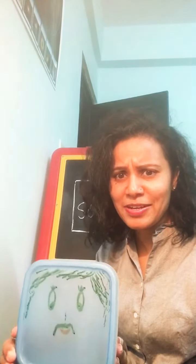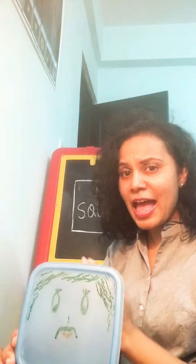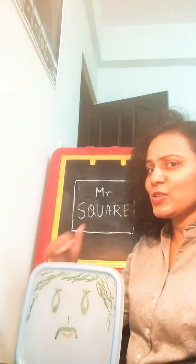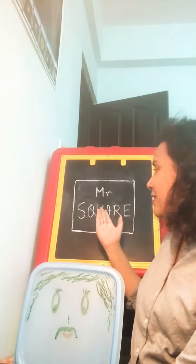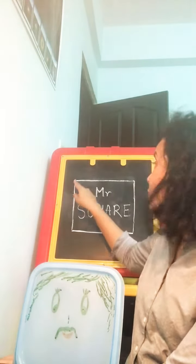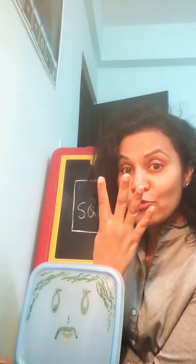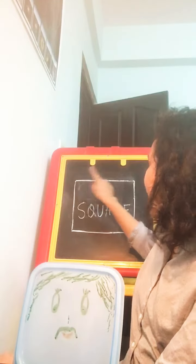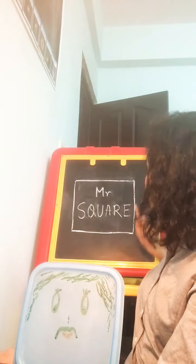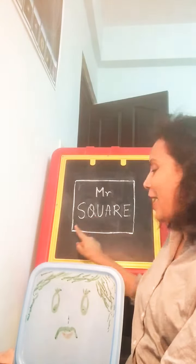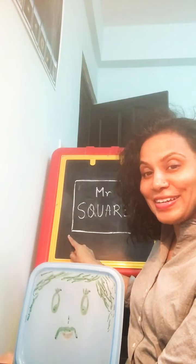You can see him here and he is over here. He has four equal sides and he also has four corners — one, two, three and four. Right?